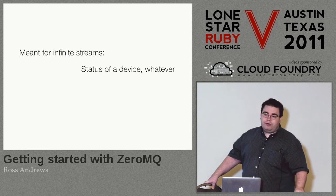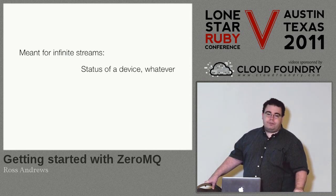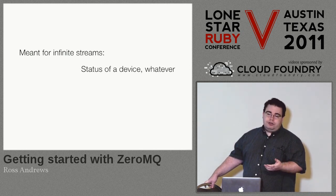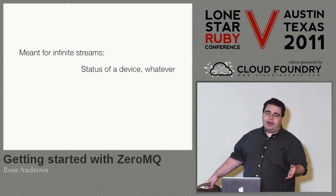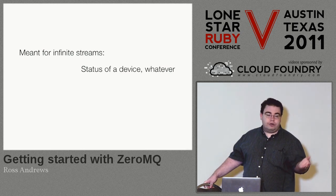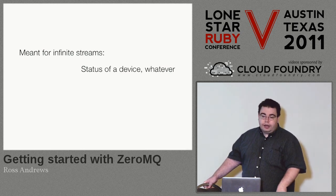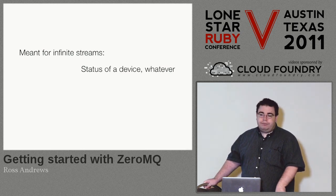Publish-subscribe is meant for infinite streams — the temperature example, reading a temperature from a thermometer once a minute, or how open is this valve every second. That's what pub-subscribe is for.